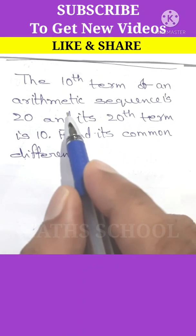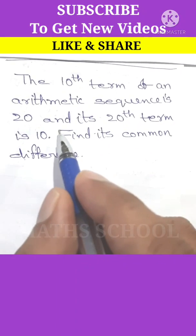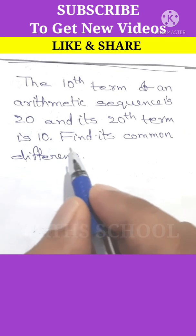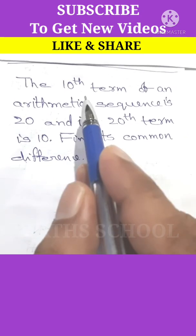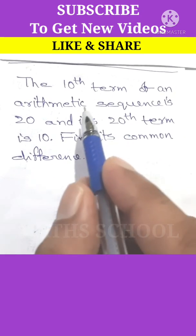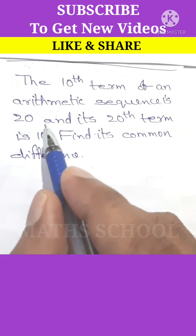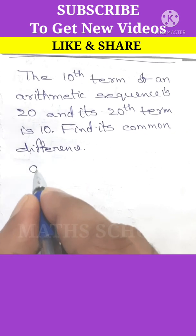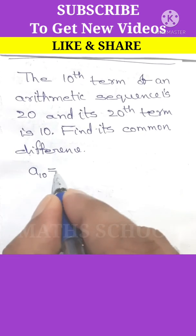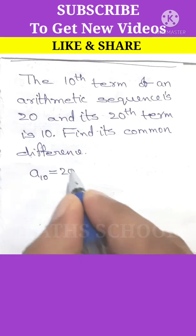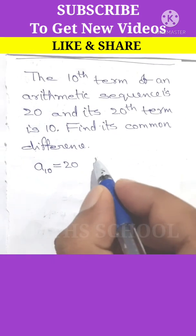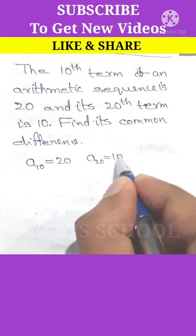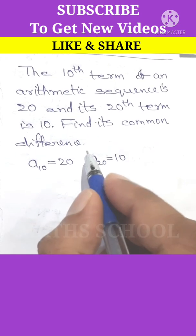The 10th term of an arithmetic sequence is 20 and its 20th term is 10. Find its common difference. The 10th term is given as a10 = 20, and the 20th term is a20 = 10. We have to find its common difference.